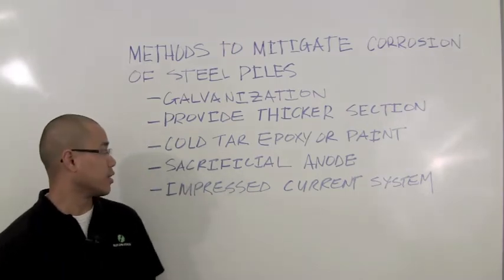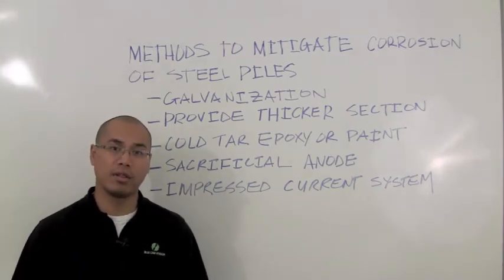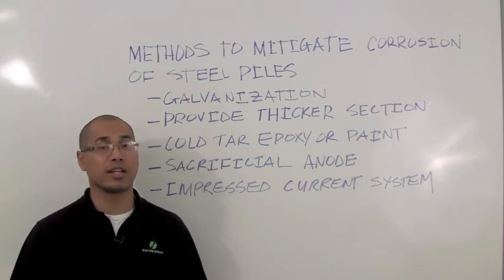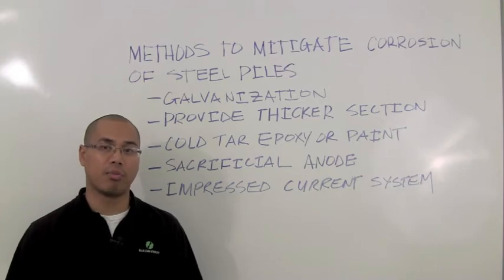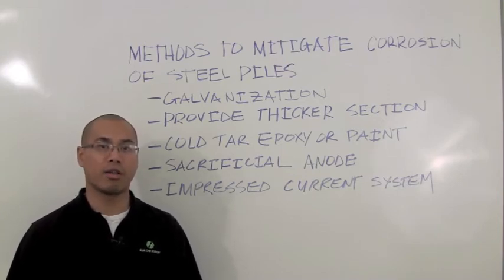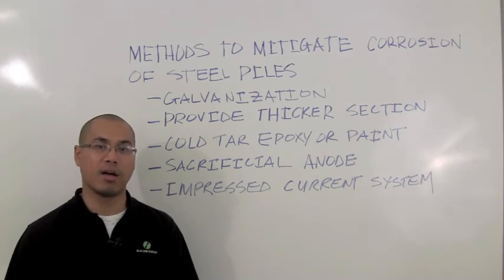The fourth method is the sacrificial anode. This method requires you to electrically attach a magnesium strip or block to the steel piles and being that the magnesium strip or block is higher on the galvanic scale compared to the steel piles, it will corrode before the steel piles will, therefore protecting it.